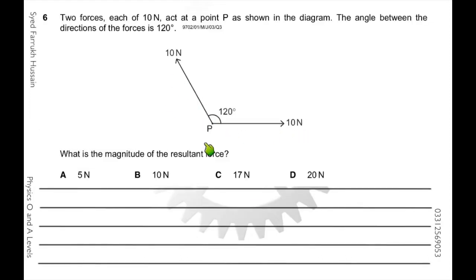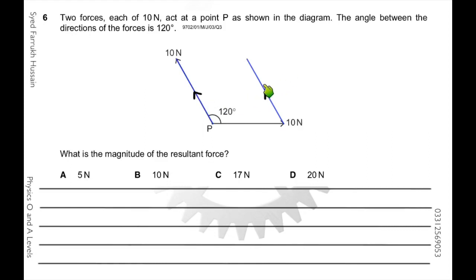In this example, there are two forces but their tails are connected. According to the vector addition rule, you must displace one vector to the head of the other. I've redrawn the second vector with the same magnitude and direction but starting from the head of the first vector. The resultant is from the tail of the first to the head of the second. Since both vectors are 10 newtons and the triangle formed is equilateral, the resultant is also 10 newtons.